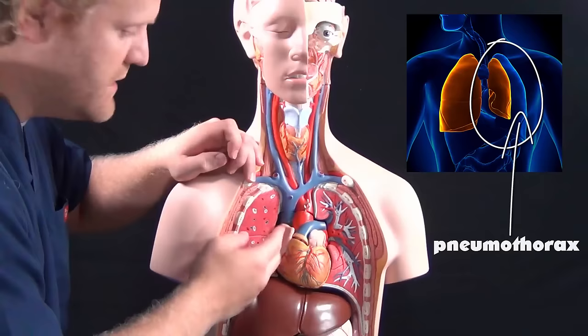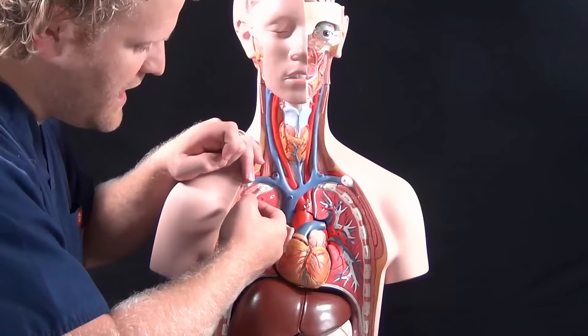So that's what we call a collapsed lung. This air filling up in here when it can't escape, it can't get out of this pleural space, so it pushes the lung in. That's a pneumothorax.